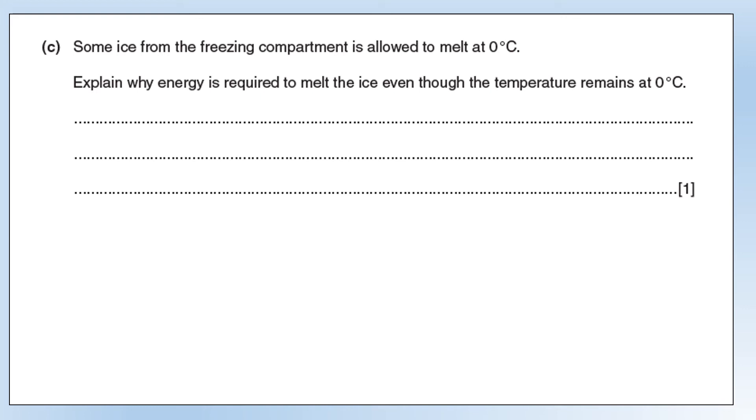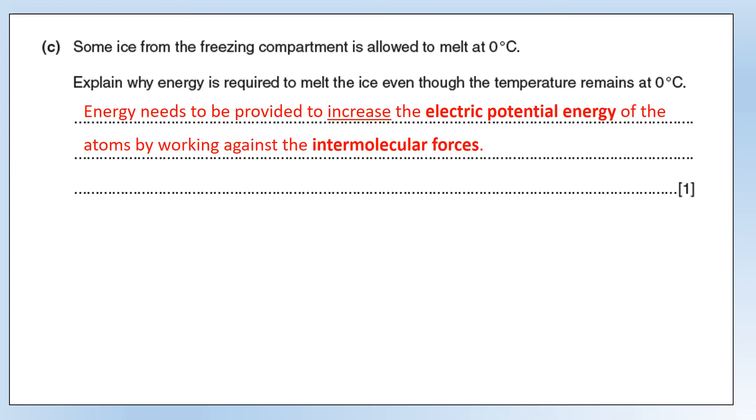Some ice from the freezing compartment is allowed to melt at zero degrees centigrade. Explain why energy is required to melt the ice even though the temperature remains at zero degrees. When a state change is occurring, what you're doing is you're increasing the electric potential energy, because you're increasing the separation between the particles. The reason you need to put energy in is you need to do work against the forces between the molecules. That's what's holding them together. So that's why you need to supply energy.